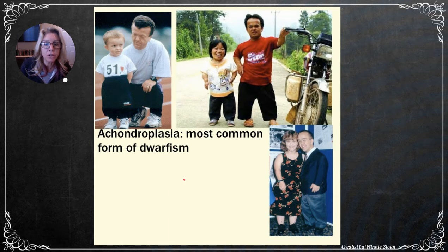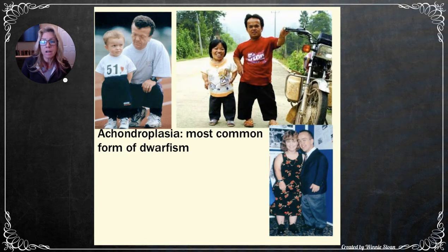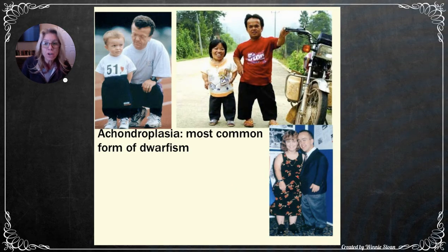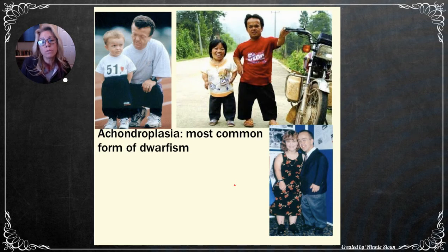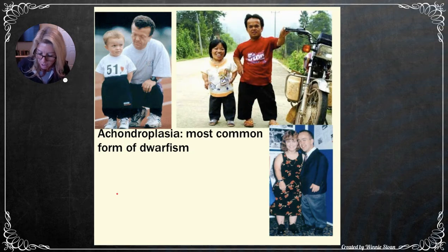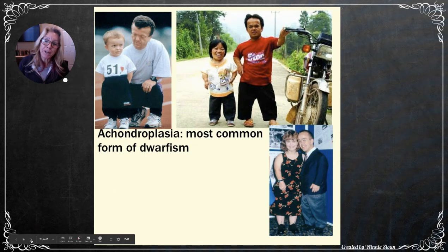Achondroplasia is the most common form of dwarfism and an autosomal dominant trait. If two affected individuals marry and are heterozygous for it, they could have a normal-height child. Importantly, if someone is homozygous dominant for this gene, they do not survive development. So anyone who survives with achondroplasia is carrying one good copy of that gene.